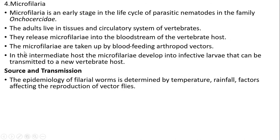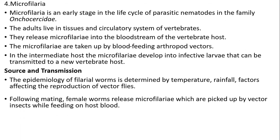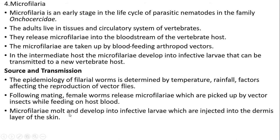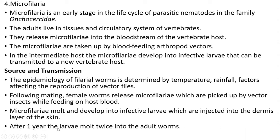Source and transmission: the epidemiology of filarial worms is determined by temperature, rainfall, and factors affecting the reproduction of vector flies. Following mating, female worms release microfilariae which are picked up by vector insects while feeding on the host's blood. Microfilariae molt and develop into infective larvae, which are injected into the dermis layer of the skin. After one year, the larvae molt twice into adult worms.